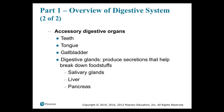These glands secrete their products into ducts that empty into the digestive tract. As food enters and passes along its length, secretions of the glandular organs — which contain water, enzymes, buffers, and other components — assist in preparing organic and inorganic nutrients for absorption across the epithelium of the digestive tract.